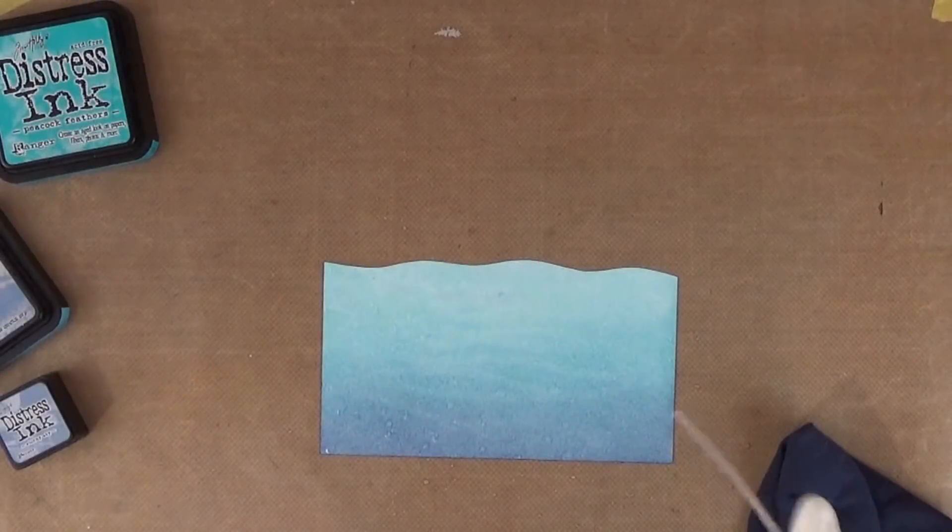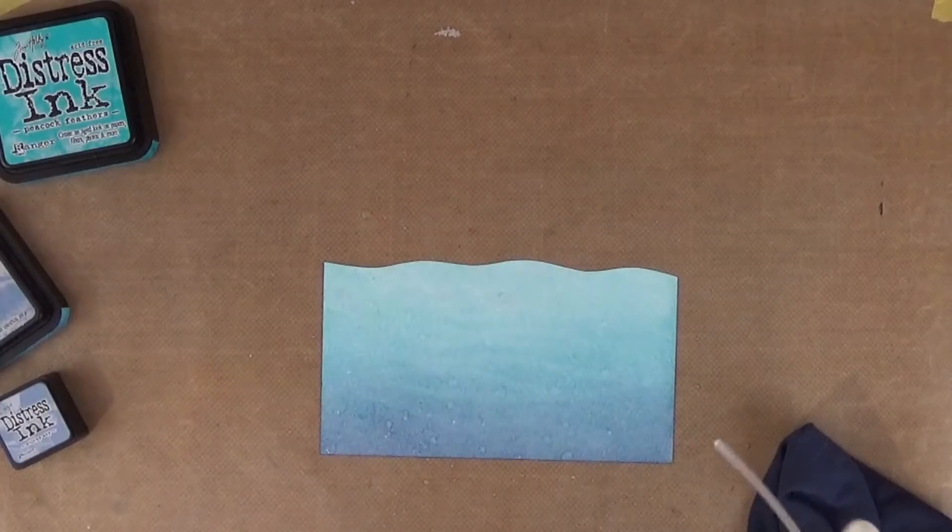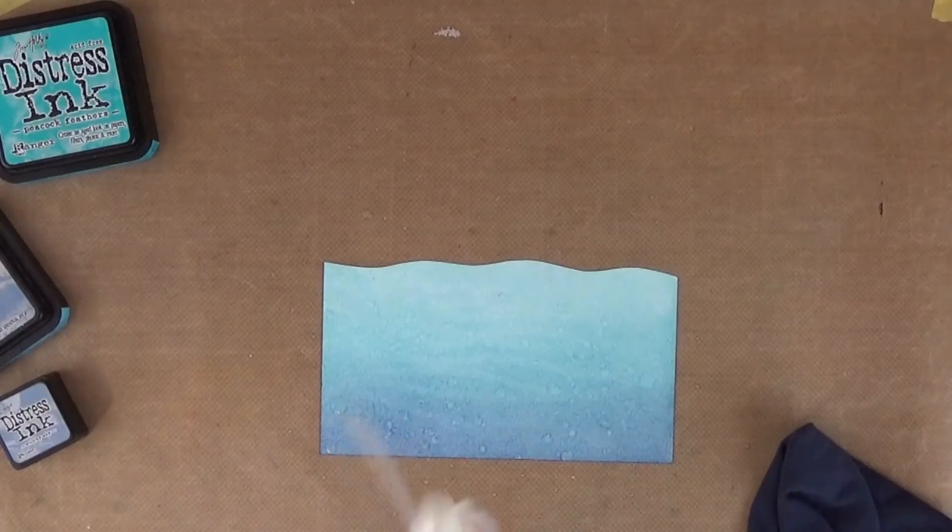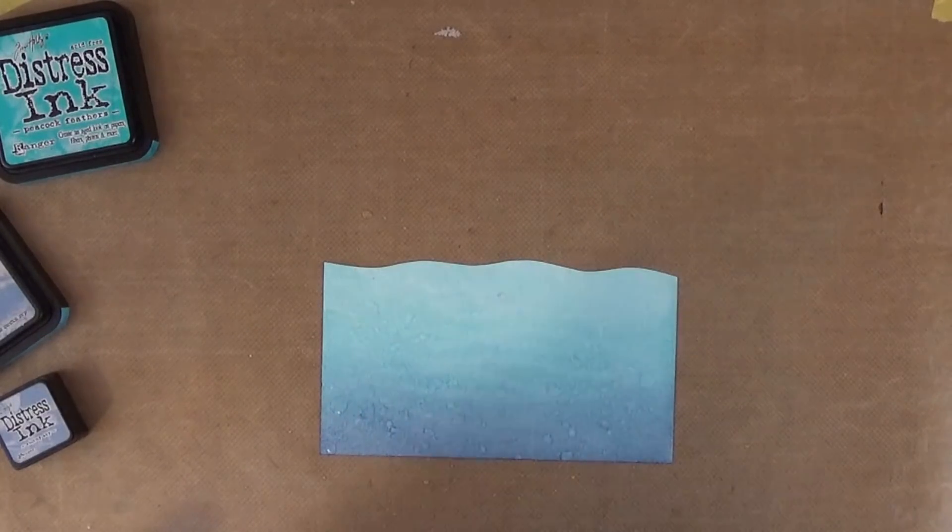Here I'm adding the last touches to the water panel, a piece of Bristol smooth paper that I inked with four different tones of distress ink: tumbled glass, broken china, peacock feathers, and stormy sky.